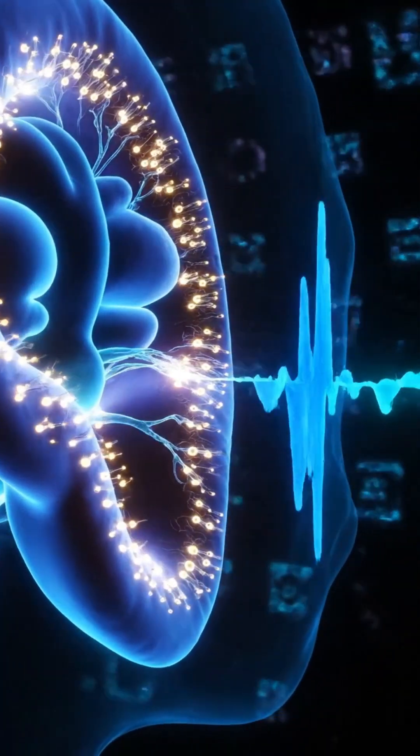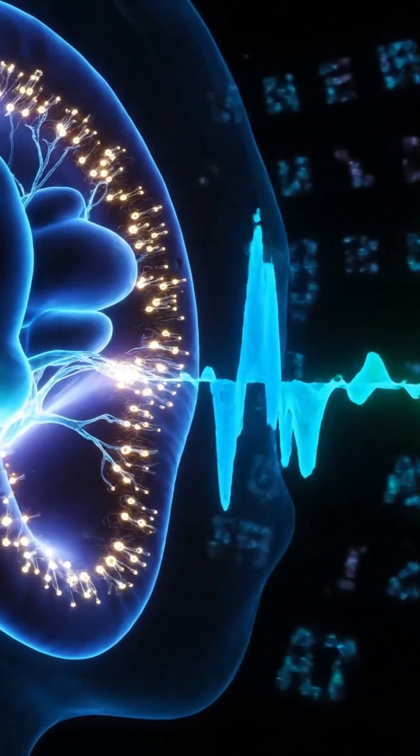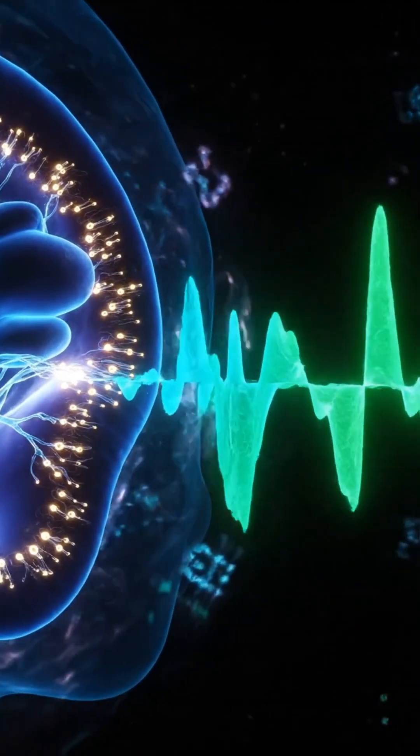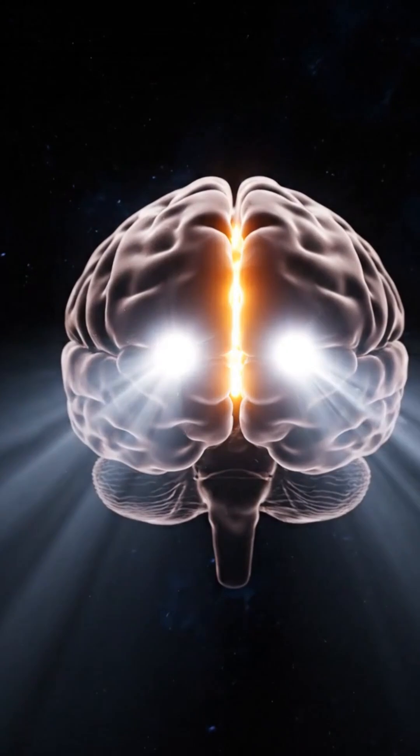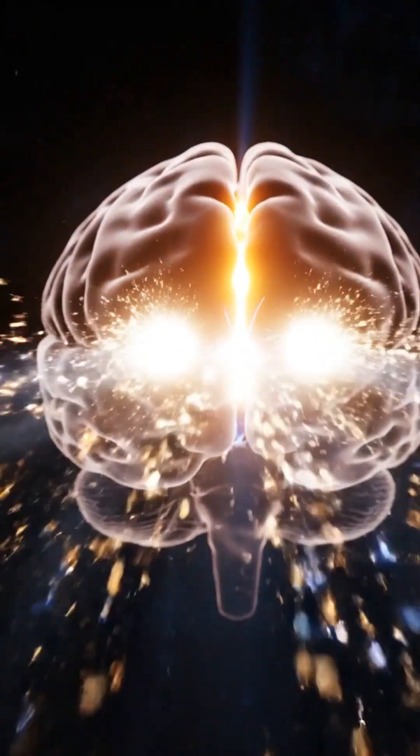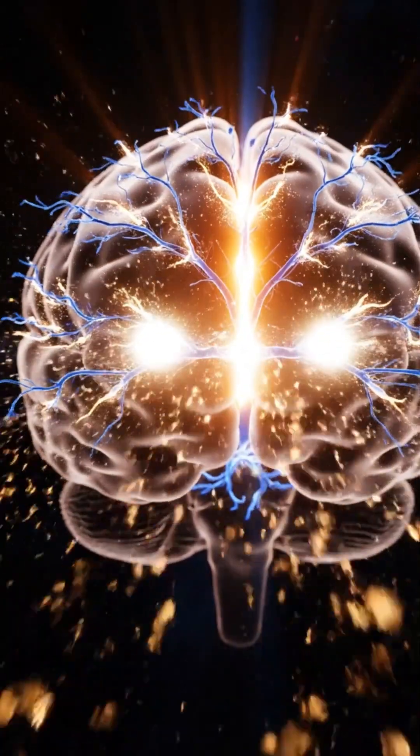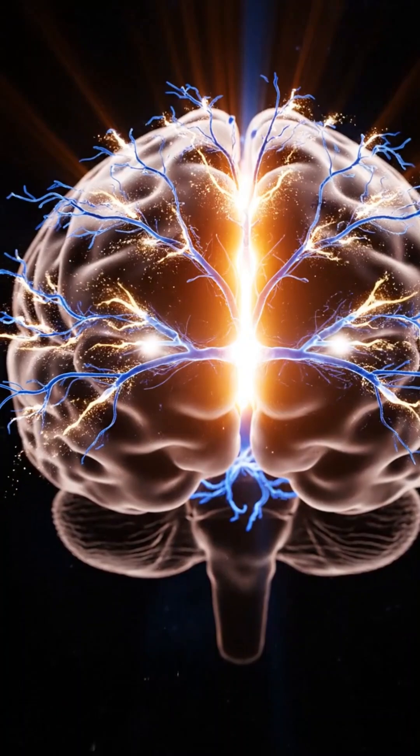The parietal lobe integrates sensory information, guiding our interaction with the environment and understanding spatial relationships. The occipital lobe interprets visual information, translating light into the vivid images that fill our perception.